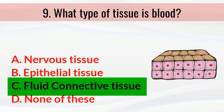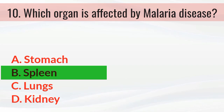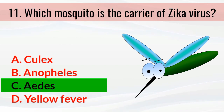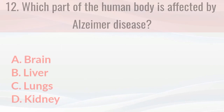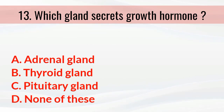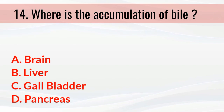What type of tissue is blood? The answer is fluid connective tissue. Which organ is affected by malaria disease? The answer is the spleen. Which mosquito is the carrier of Zika virus? The answer is Aedes mosquito. Which part of the human body is affected by Alzheimer's disease? The answer is the brain.